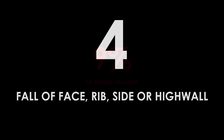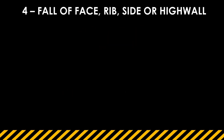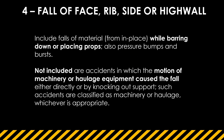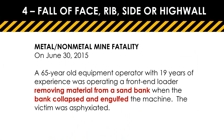Number four: fall of a face, rib, side, or high wall, accounting for about 9% of fatalities. The definition includes fall of materials while bearing down and placing props, as well as pressure bumps and bursts. This does not include accidents in which the motion of machinery or haulage equipment caused the fall. An example: a 65-year-old equipment operator with 19 years of experience was operating a front-end loader removing material from a bank when it collapsed, and he was ultimately engulfed and asphyxiated.